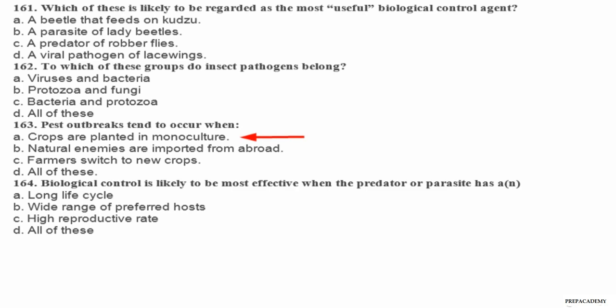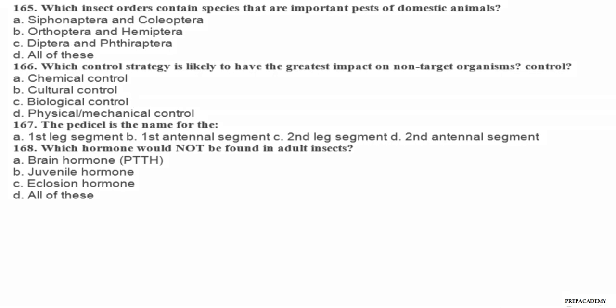Question 164. Biological control is likely to be most effective when the predator or parasite has: A long life cycle, B wide range of preferred hosts, C high reproductive rate, D all of these. Question 165. Which insect orders contain species that are important pests of domestic animals? Question 166. Which control strategy is likely to have the greatest impact on non-target organisms? A chemical control, B cultural control, C biological control, D physical/mechanical control. Question 167. The pedicel is the name for the: A first leg segment, B first antennal segment, C second leg segment, D second antennal segment.